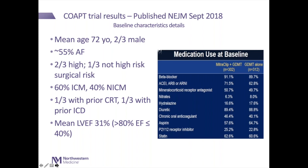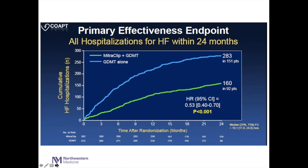These are the standard guideline medications for heart failure therapies that all patients were on. This was one of the few home runs you ever see in cardiology. The top bars show patients who got guideline medical therapy only — about 283 heart failure hospitalizations in 151 patients within two years. The group that got MitraClip plus therapy had only 160 hospitalizations — a massive reduction, close to 50% reduction in heart failure hospitalizations.